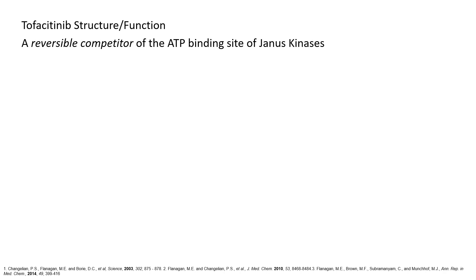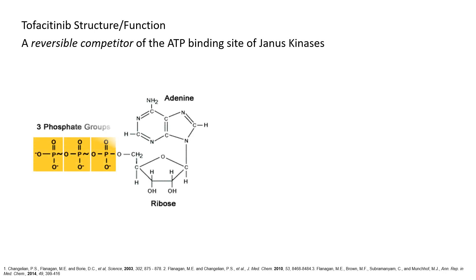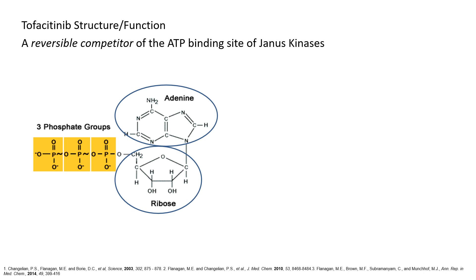Tofacitinib is a competitor of the ATP binding site of the Janus kinases. ATP has a structure consisting of adenine, a ribose sugar, and three phosphate groups, which are critical for the function of ATP — adenosine triphosphate.